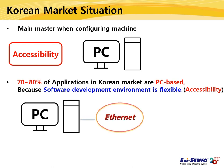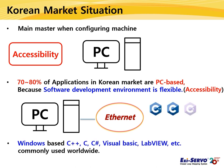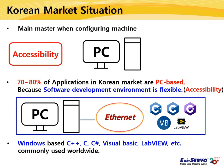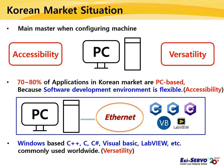The most widespread software development environment in the world is PC, and Windows-based C++, C, C Sharp, Visual Basic, LabVIEW, etc. can be used commonly, giving good versatility. Therefore, Fastek's Ethernet products provide API for these programming languages, making them ideal for various customer software development environments. Fastek's Ethernet products are used as a suitable solution in the Korean market where accessibility and versatility are important.